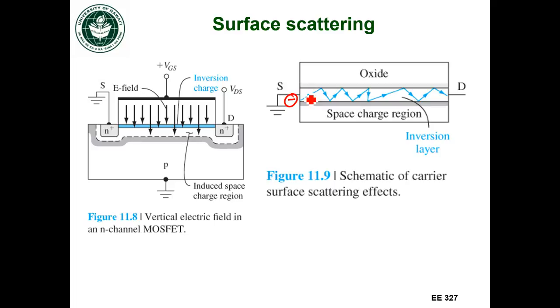And the reason why is because once my electron leaves the source and it's in the channel, my electric field is going that way. So my electron wants to move up the electric field, so my electron is going to start moving upwards towards the oxide. Now when it gets close to the oxide, there might be some storage charge in the oxide that could repel that electron away.